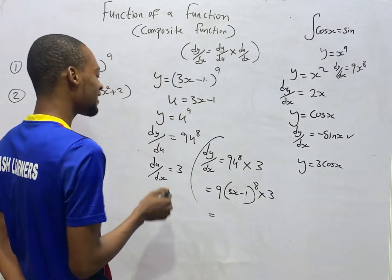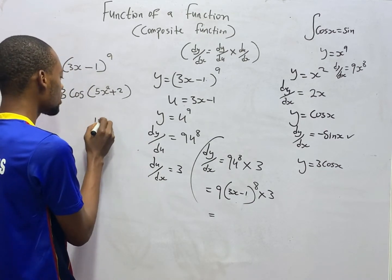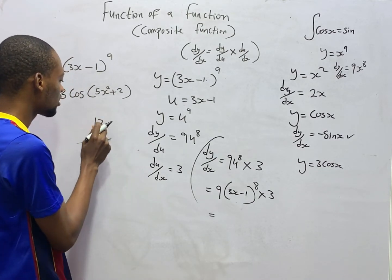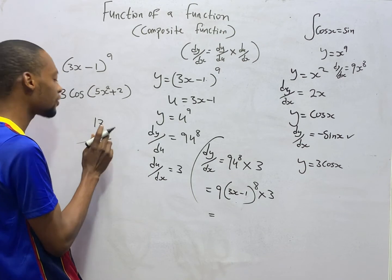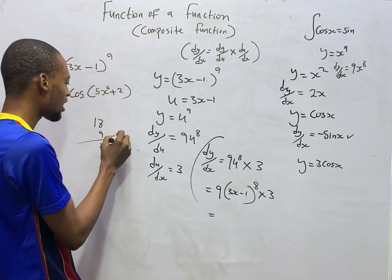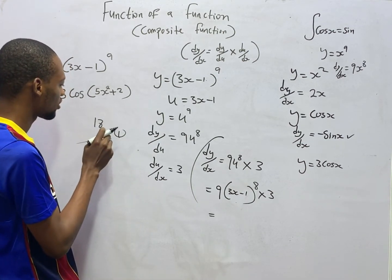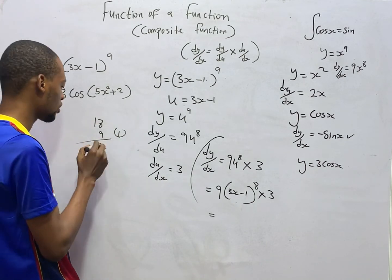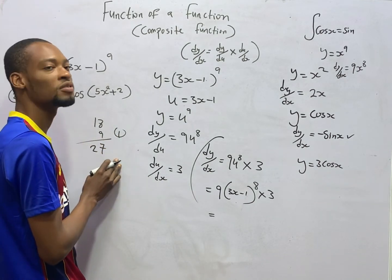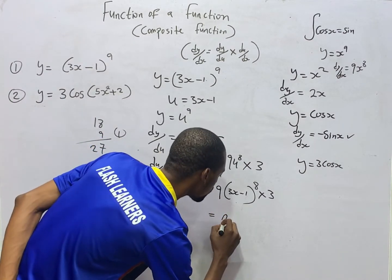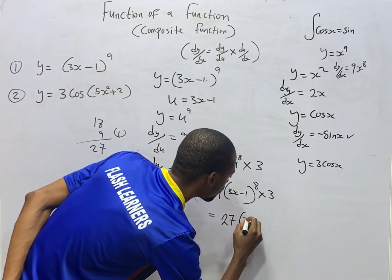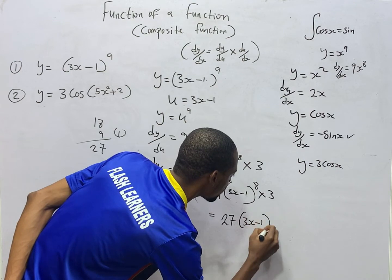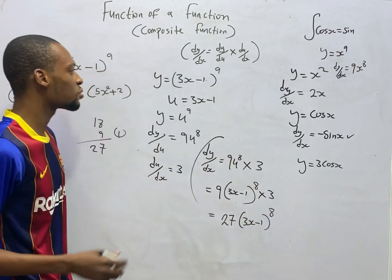Substituting, remember u equals 3x-1. We simply have 9u raised to the power of 8 times 3. So this equals 9 times 3, which is 27. So this will give you 27(3x-1) to the power of 8. So that is the answer.